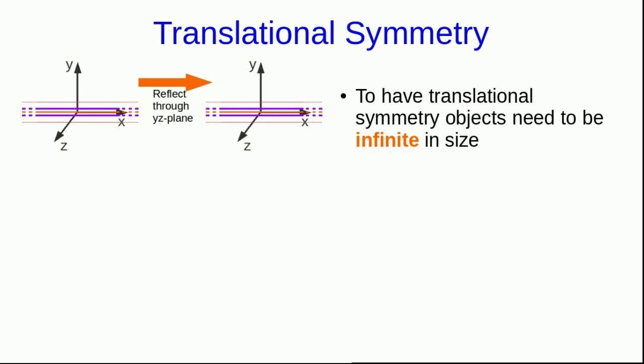You might be having a hard time picturing how any object can have translational symmetry. After all, if you shift something left or right, it's always going to look different, isn't it? Well, that's true for real objects, but there is one way to have translational symmetry, and it's that the object has to be infinite in size.